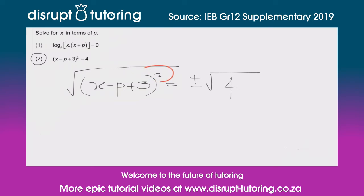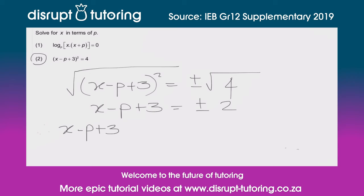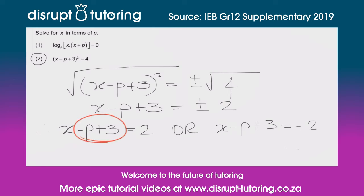We get rid of that square, which gives us x minus p plus 3 on the left-hand side, and plus or minus 2 on the right-hand side. Now we've got two options: either x minus p plus 3 equals positive 2, or x minus p plus 3 equals minus 2.